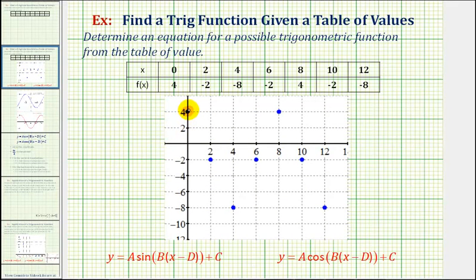Here we have the point zero four, two negative two, four negative eight, six negative two, eight four, ten negative two, and twelve negative eight.